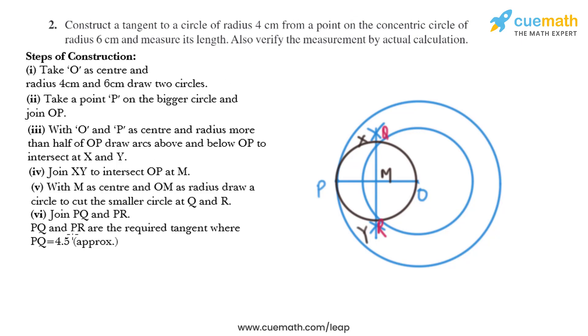Now in the next step, we need to join PQ and PR. PQ and PR are the required tangent where PQ equals 4.5 approximately. So we just need to draw PQ and PR. We just need to join them.